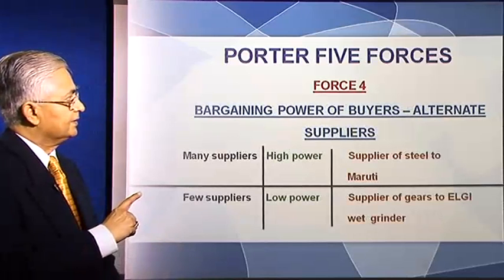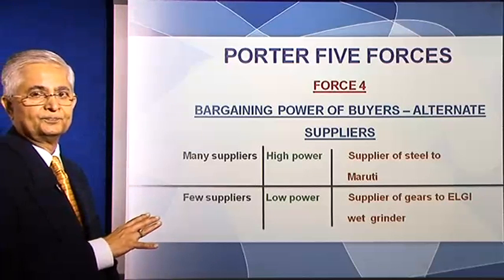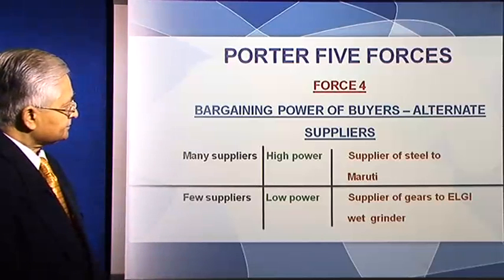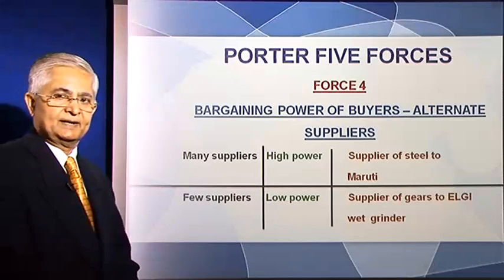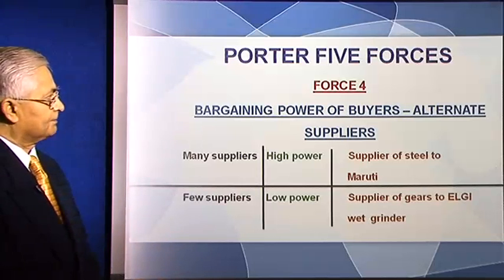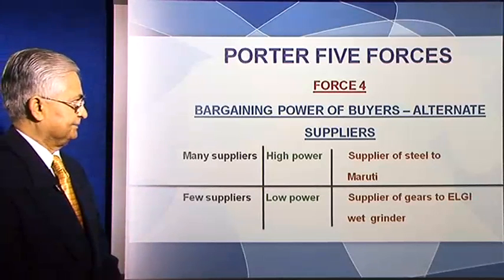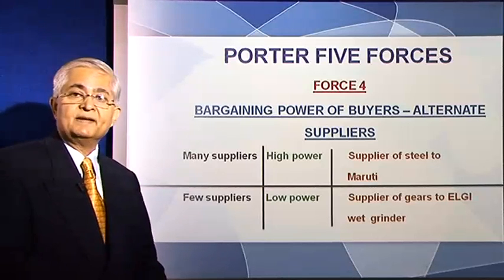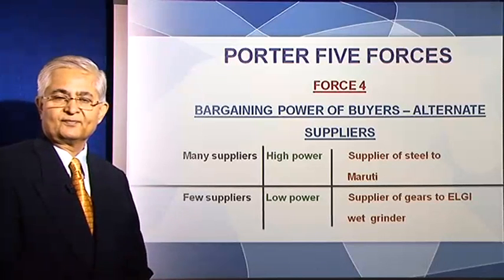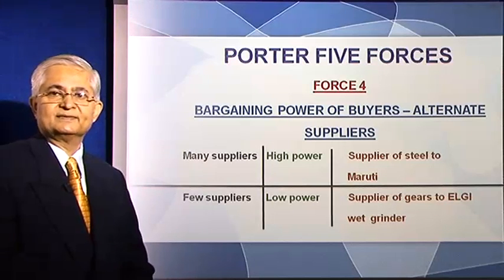We have looked at all these issues in the context of force 4, but now we are looking at some of those issues in more detail. Let's take the issue of alternate buyers. Take the situation of Maruti, the car company, buying steel. There are many suppliers of steel who can meet the requirements of Maruti, and because there are many suppliers, bargaining power in this case is with Maruti.